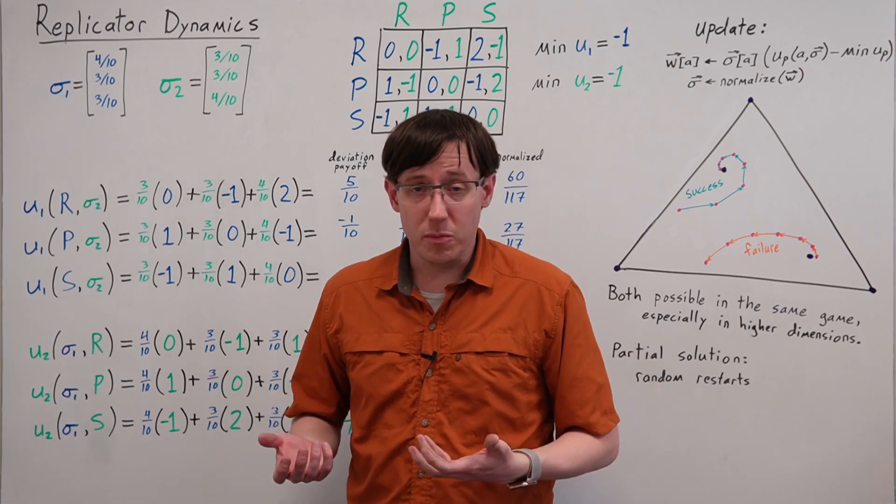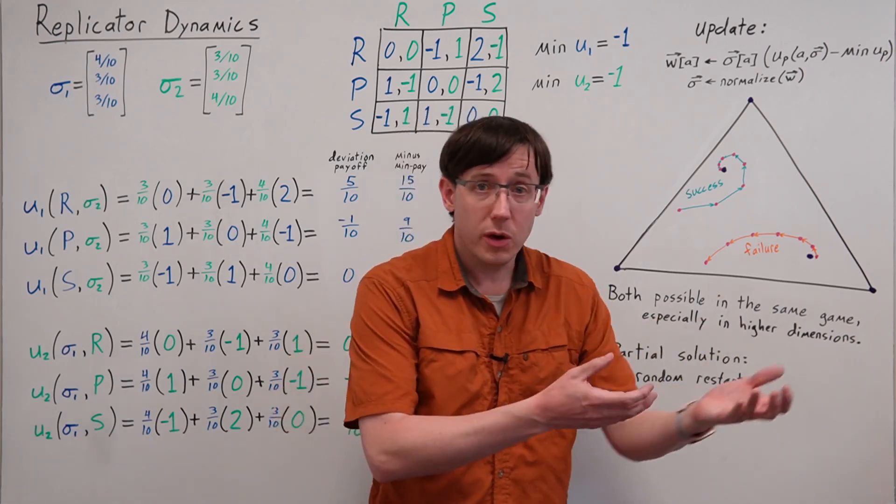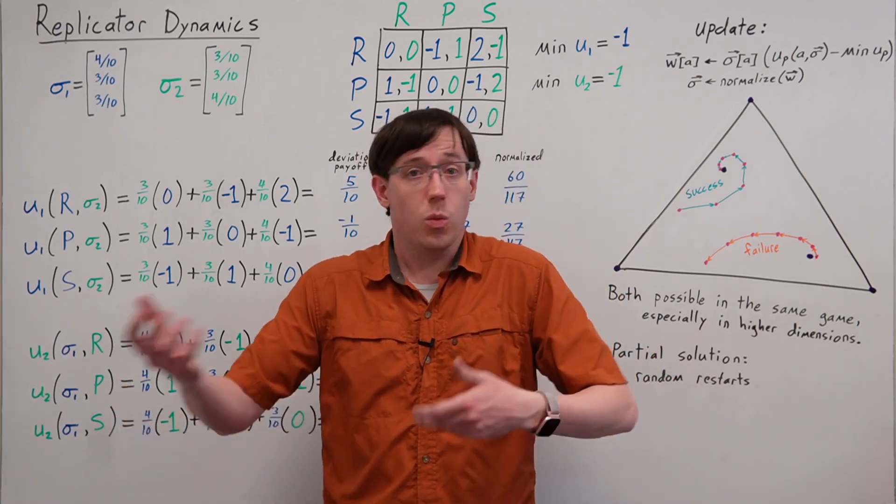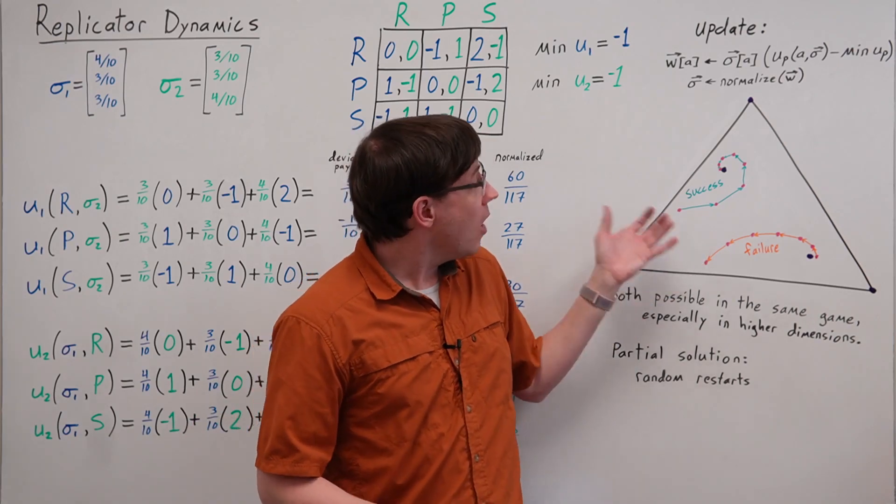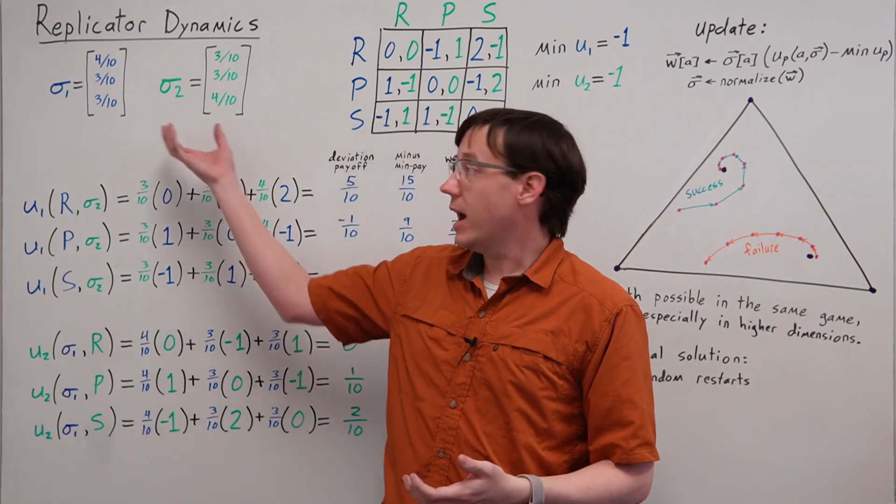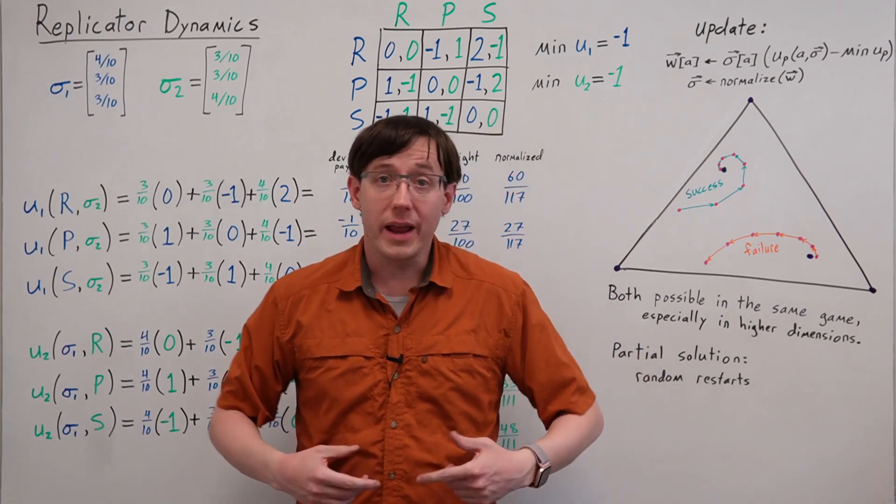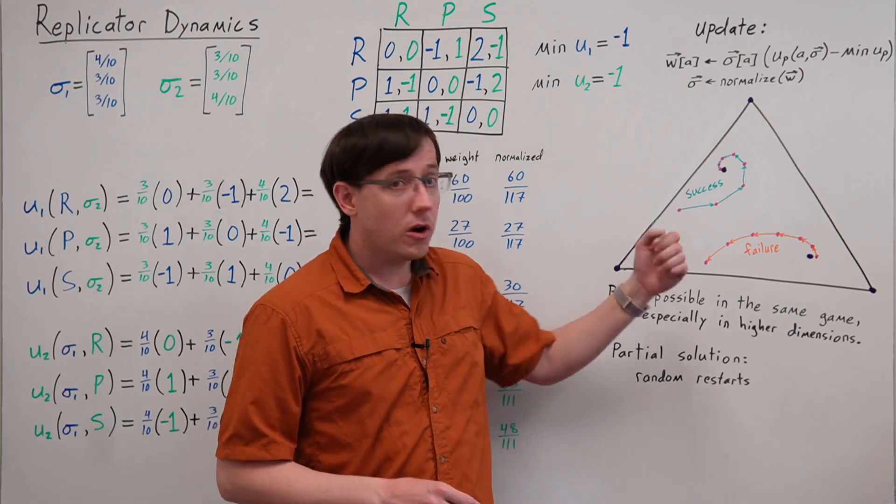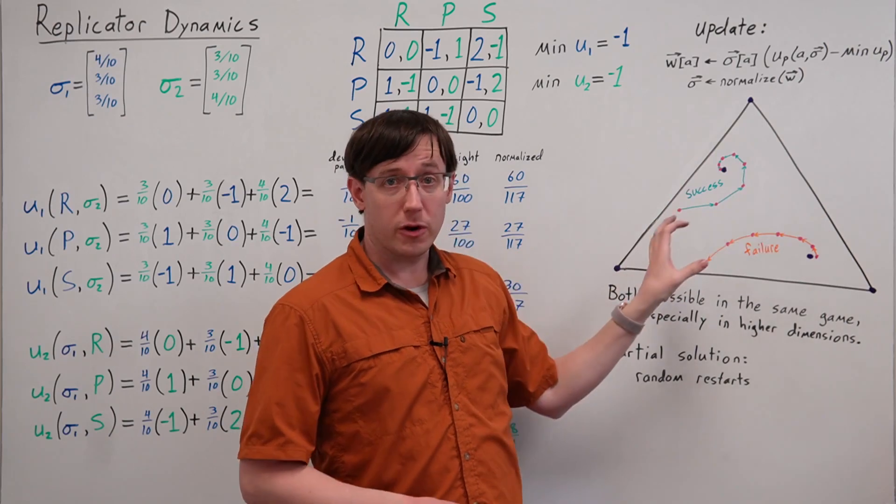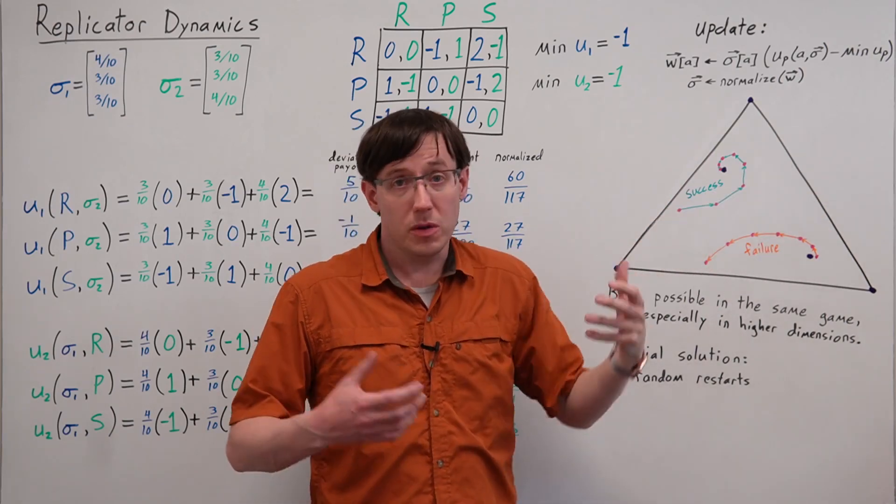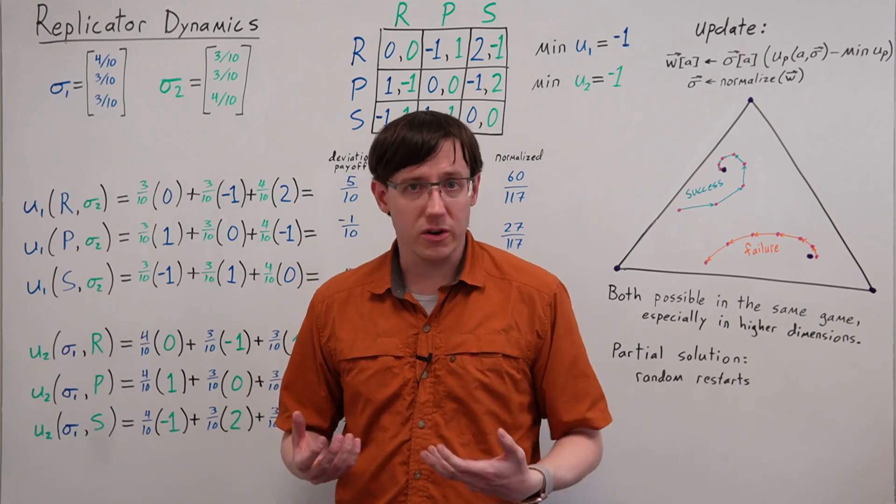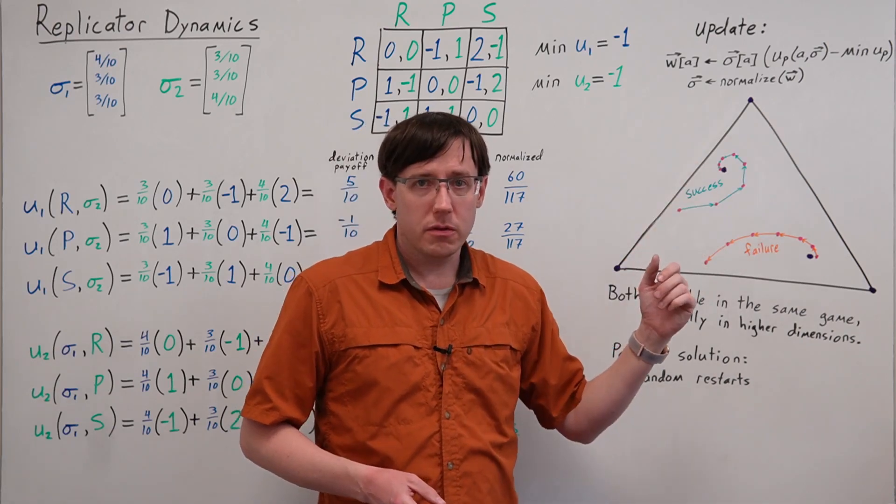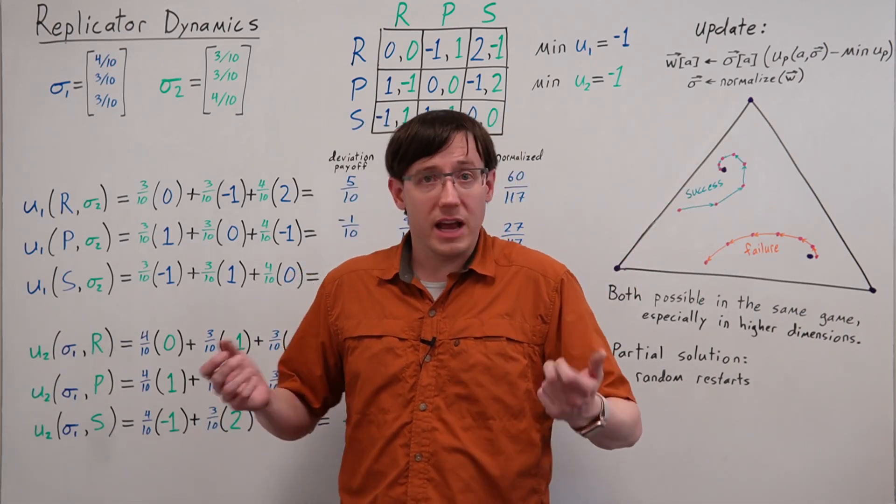But in large games, it tends to be the case that there are some equilibria Replicator Dynamics can find and others that it can't, and what we find depends entirely on where we happen to initialize our first profile. So a very effective way to use Replicator Dynamics is to restart it many times from many different profiles spread around the simplex. By using many restarts of the Replicator Dynamics algorithm from different random initial profiles, we can often succeed in finding Nash equilibria.